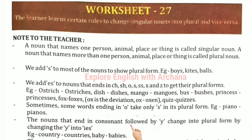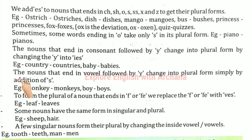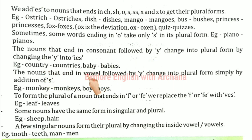Nouns that end in a consonant followed by y change their plural form by changing the y into -ies. Nouns that end in a vowel followed by y form their plural simply by adding -s. For example: monkey → monkeys, boy → boys.